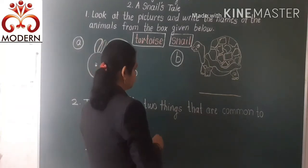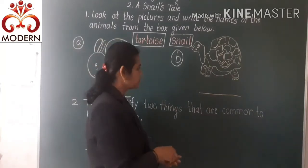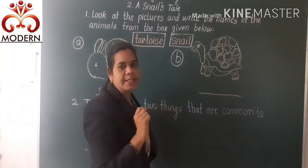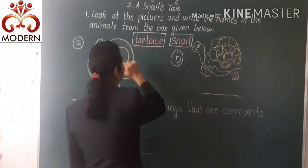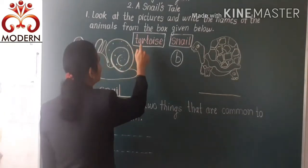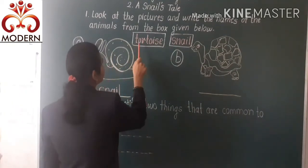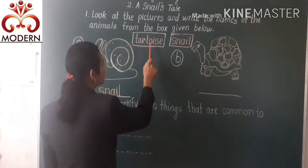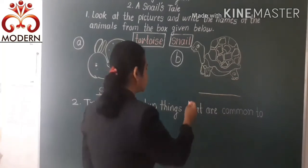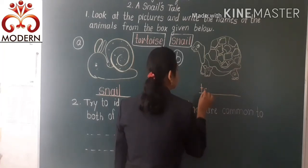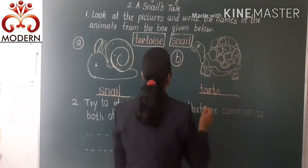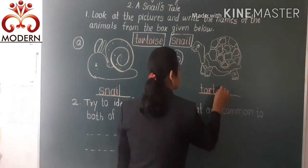And the next picture — what is this? This is a tortoise. The spelling of tortoise is T-O-R-T-O-I-S-E. Tortoise.